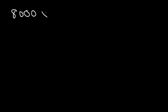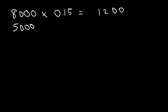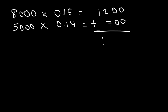Let's verify: $8,000 was placed in the 15% account. 15% of 8,000 is $1,200 in interest. The second account received $5,000 at 14%, so 5,000 times 0.14 is $700 in interest. The total interest is 1,200 plus 700, which equals $1,900 — the numbers check out.